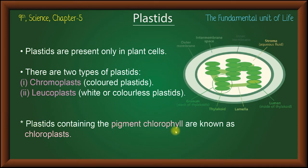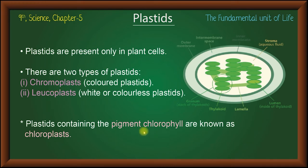Plastids containing the pigment chlorophyll are known as chloroplast. This is a very important point. Chloroplast is a type of chromoplast that specifically contains chlorophyll pigment. The chlorophyll pigment is responsible for photosynthesis, so where there is chlorophyll pigment, we call it chloroplast.